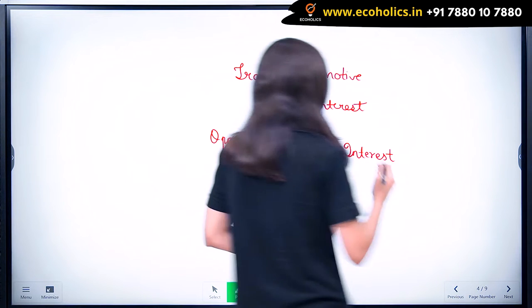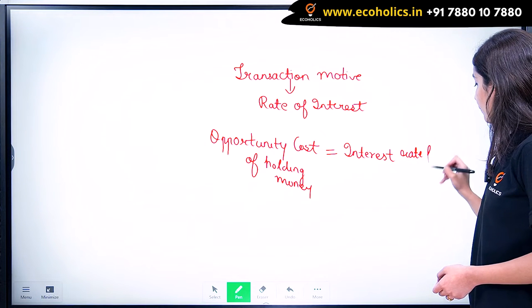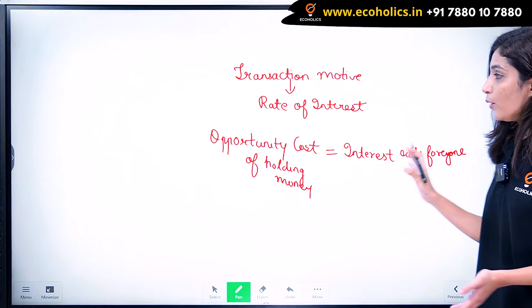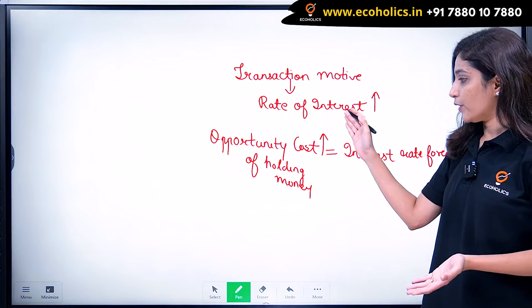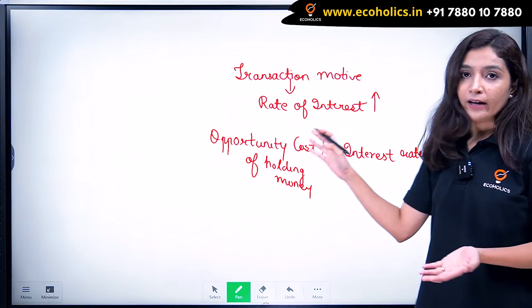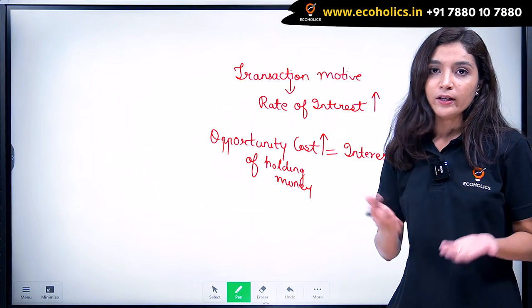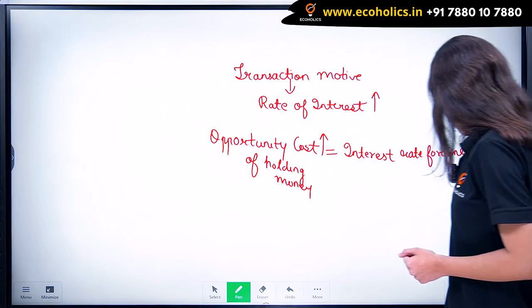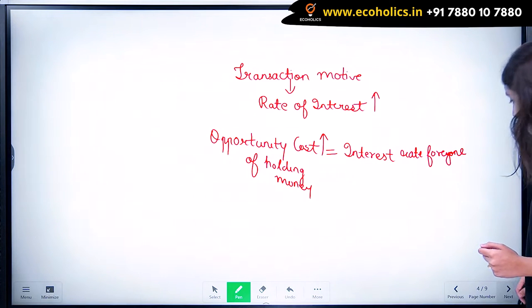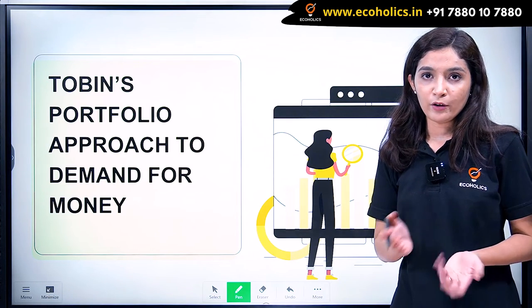They said that at higher rate of interest, the opportunity cost of holding money is also high. So at higher rate of interest, people hold less money for transaction purposes. These are the two criticisms of Keynes' demand for money.